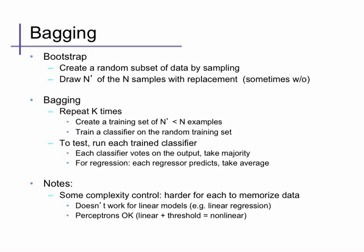This doesn't work on predictors that are linear functions of the input data, since the average of a linear function will just be another linear function. It does work with anything that has non-linearity, like perceptrons where we have a linear function but it's thresholded so the actual prediction is not a linear function of the inputs.